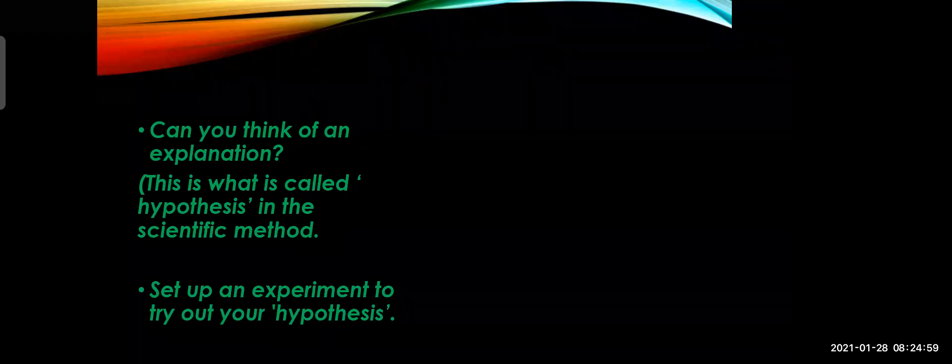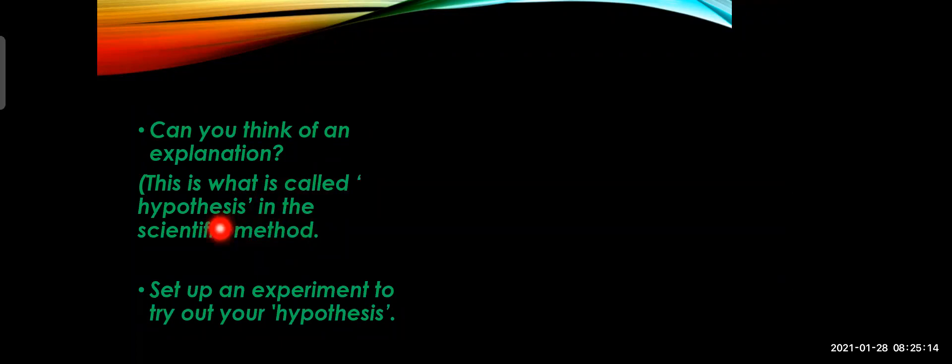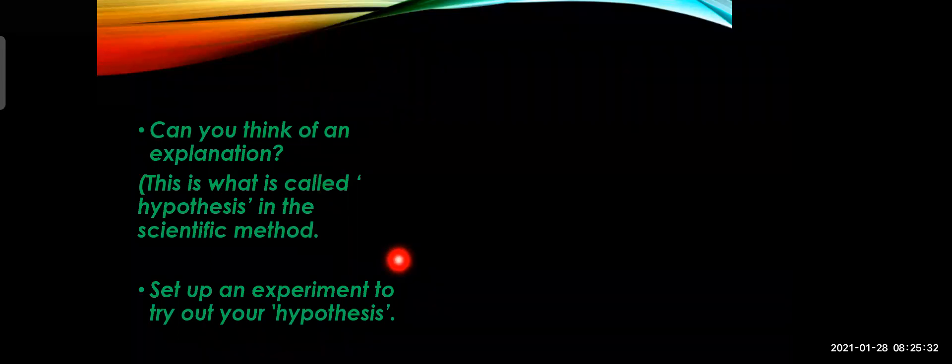The next step is to think of an explanation — this is called hypothesis in the scientific method. Hypothesis means guesses and ideas that are not based on certain knowledge. To test your hypothesis, you have to set up an experiment to try out your ideas and find out whether your guess is right or wrong.